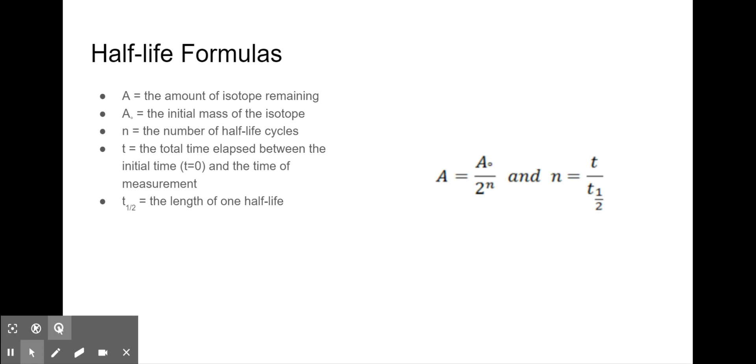The other formula is N equals small t, which is the total time elapsed between the initial time and the time of the measurement, divided by t subscript one-half, which is the length of one half-life.